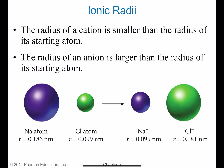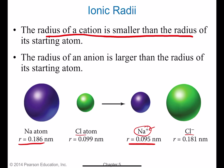Regarding ionic radius: when atoms gain or lose electrons, their size also changes. With sodium, when it loses an electron to become positively charged, it's losing the electron in the outermost shell, so it gets smaller. With chlorine, going from neutral to negative, it gained an electron and actually becomes a little larger. The radius of a cation is smaller than the radius of the neutral atom, and the radius of an anion is slightly larger than the neutral atom.